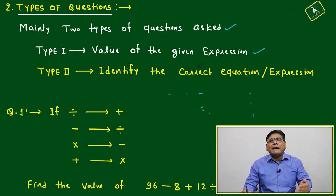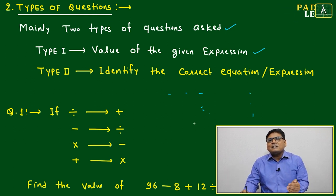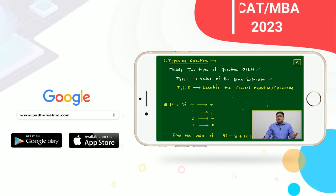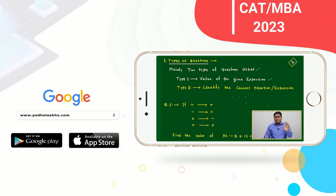But in Type II, you have to check all five or four equations or expressions given and verify which one is correct and which are wrong. It will be a little time consuming, but concept-wise it is almost the same.